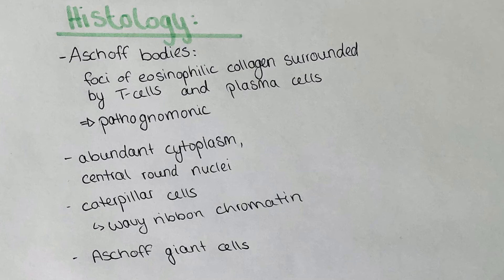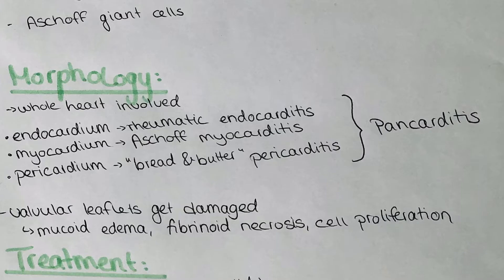The whole heart is involved in rheumatic heart disease, which is why we call it pancarditis. In the endocardium, we have rheumatic endocarditis which also affects the heart valves, where deposition of the pathogen leads to thrombus formation and the destruction of the layers of the valve and the lining of the heart.